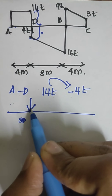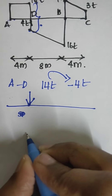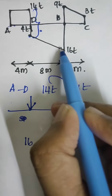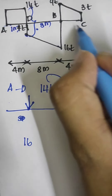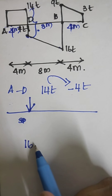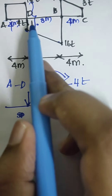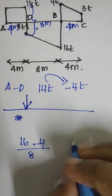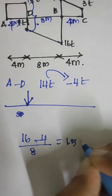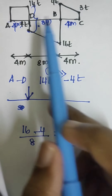We have drawn the point load at D. Next, from D to B: the length is 8 meters and the shear force changes from 16 to minus 4. So the UDL = (16 − 4) / 8 = 1.5 ton per meter. The shear force is linear in this region, confirming the load is a UDL of 1.5 t/m.